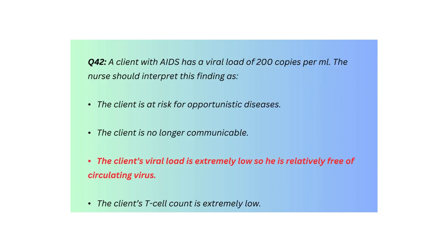Q42. A client with AIDS has a viral load of 200 copies per mL. The nurse should interpret this finding as: the client is at risk for opportunistic diseases, the client is no longer communicable, the client's viral load is extremely low so he is relatively free of circulating virus, or the client's T-cell count is extremely low.